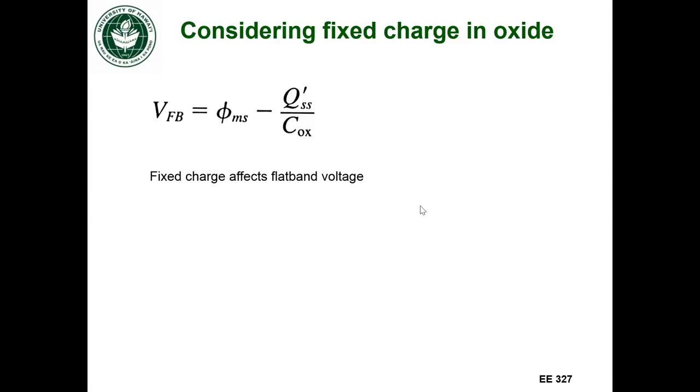Another non-ideal effect that we didn't consider was that we assumed there was no fixed charge in the oxide in the ideal case. But the reason why there's a flat band voltage is because there could be some charge in the oxide.